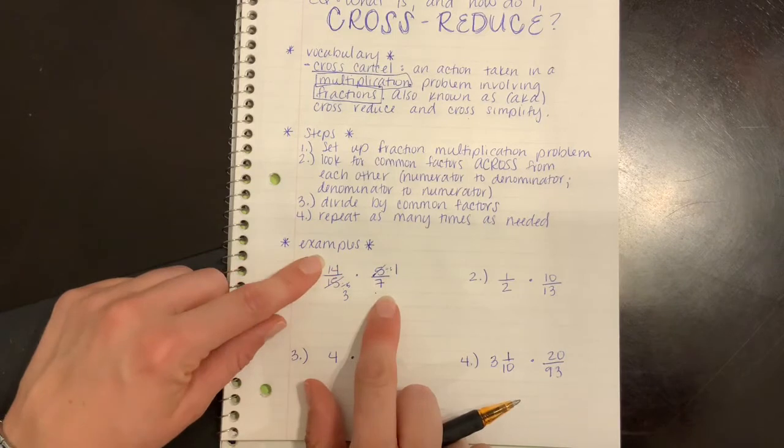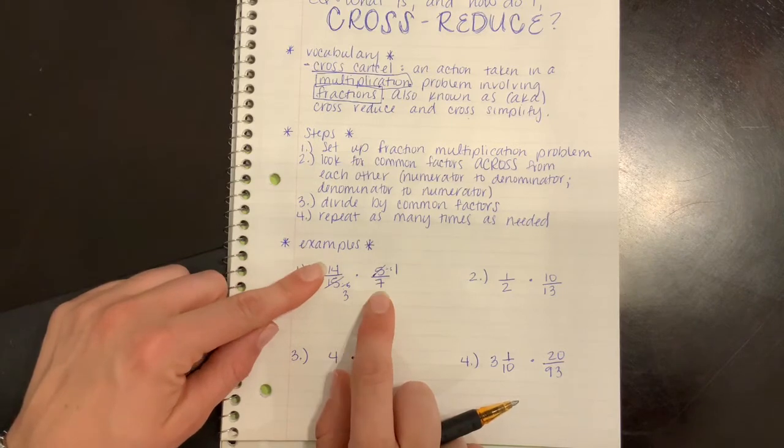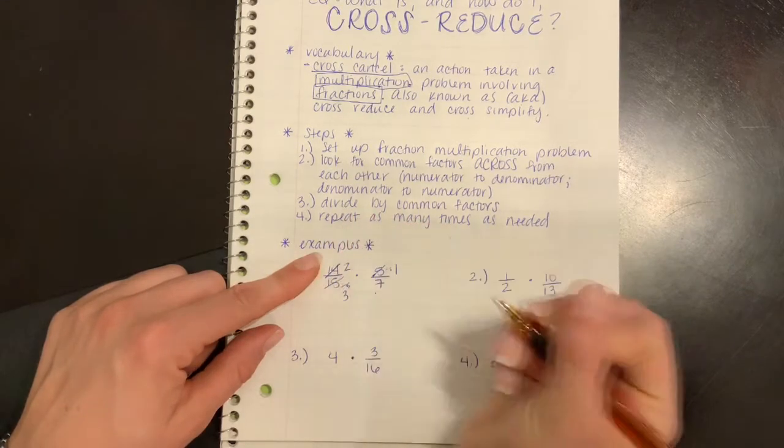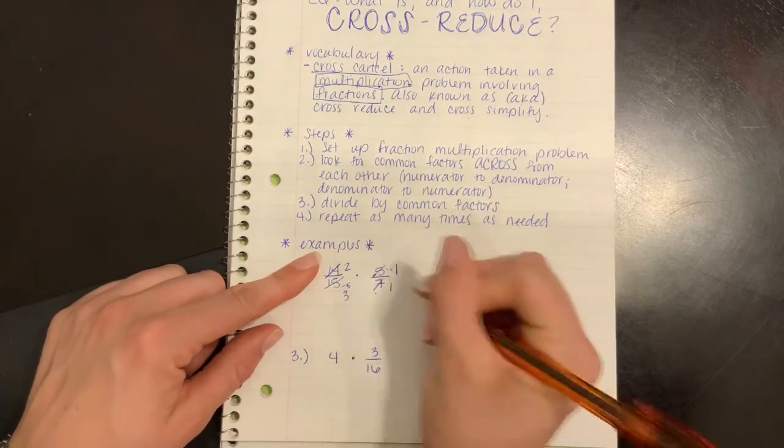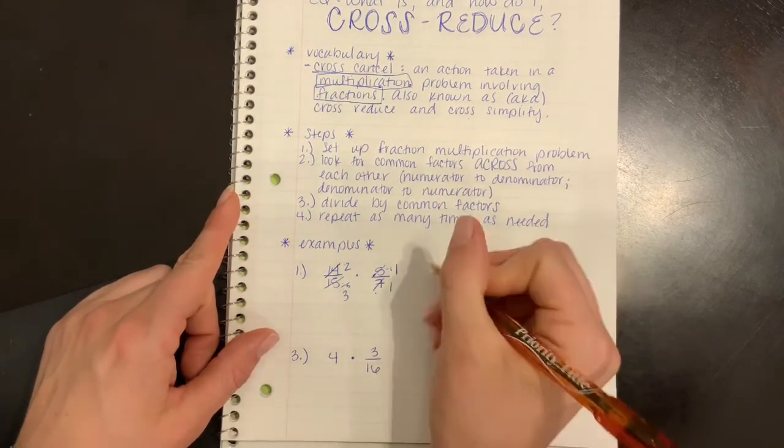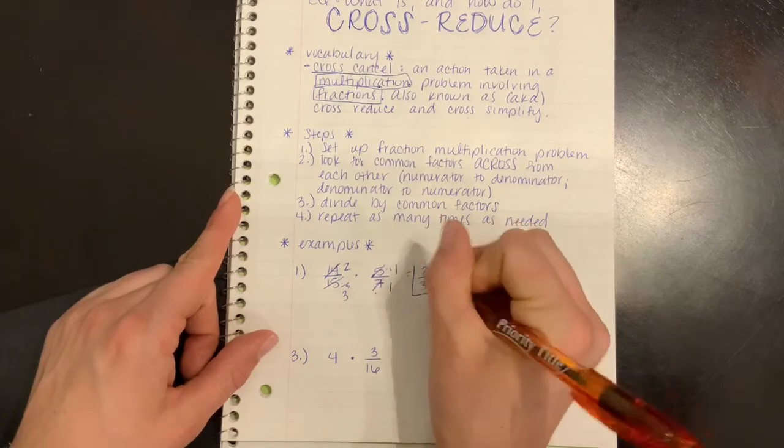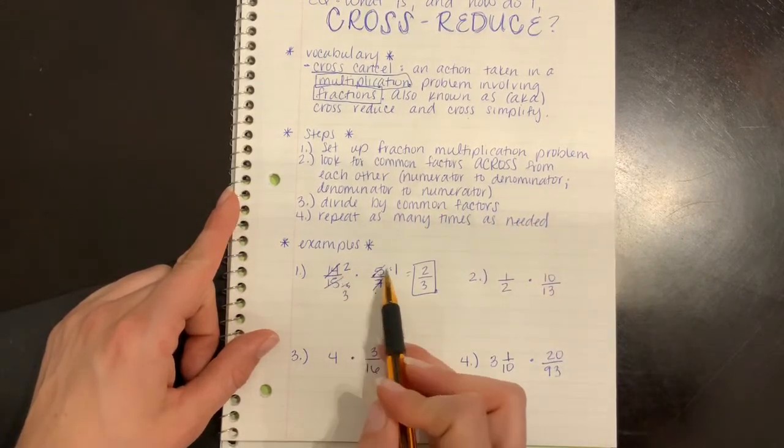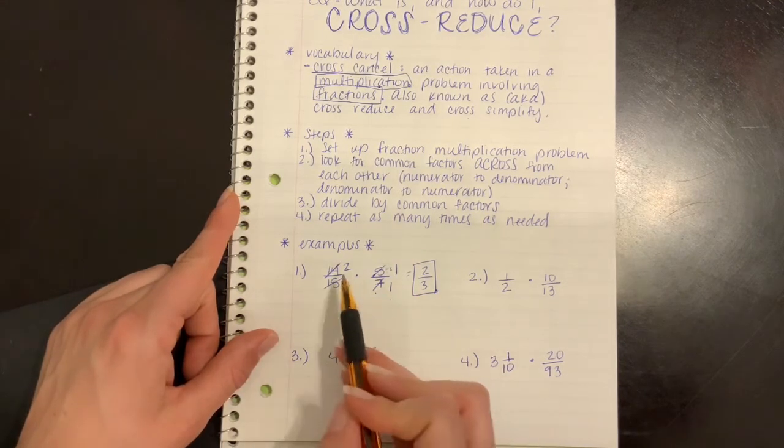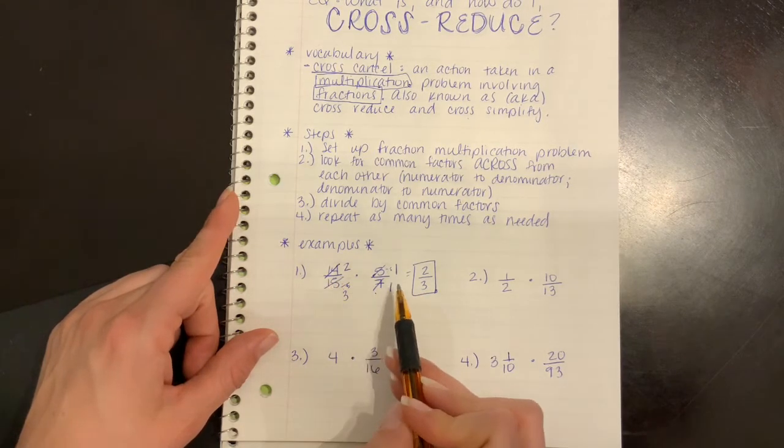I'm going to do that same process for fourteen and seven. I know that they have a common factor of seven. I'm going to reduce them both, and when I say reduce, I mean divide, by seven. Fourteen divided by seven is two, and seven divided by seven is one. Now, doesn't that make my multiplication so much easier? I think it is way easier to multiply two times one and three times one than to multiply fourteen times five and fifteen times seven, and then reduce when I'm done. I want you guys to notice that we're reducing in the problem itself and not in the answer. It's going to make our multiplication a heck of a lot easier.